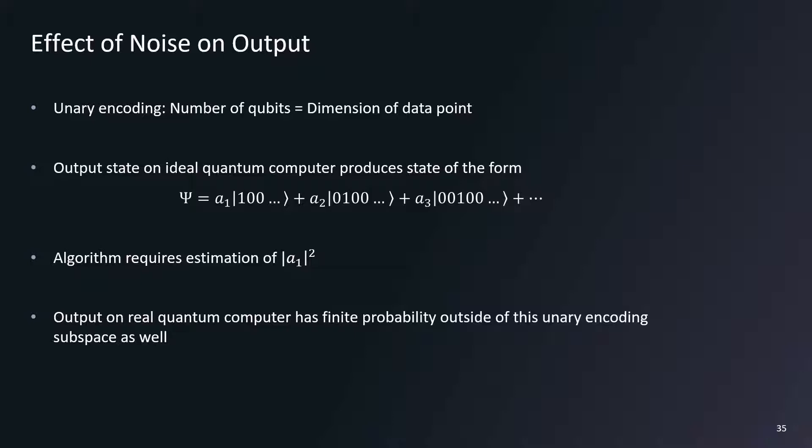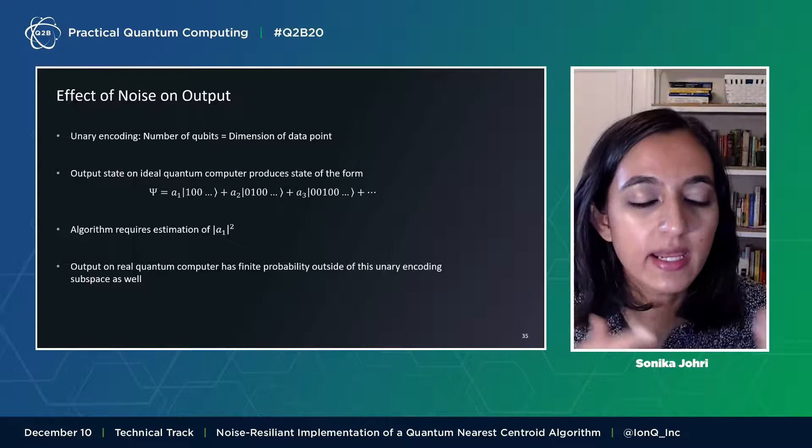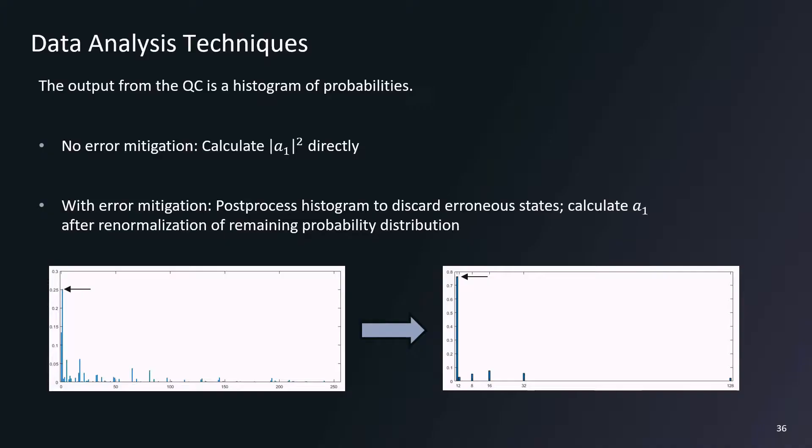Now, before running an algorithm on a real quantum computer, we always have to think about the effects of noise. Here we used a unary encoding in which the number of qubits is equal to the dimension of the vector corresponding to each data point. The equation here shows the form of the quantum state obtained at the end of the circuit execution. The algorithm requires the estimation of the coefficient of the first computational basis state in the superposition. However, due to noisy operations on a real quantum computer, the output will also have finite probability to produce a state that lies outside of the limited subspace shown here.